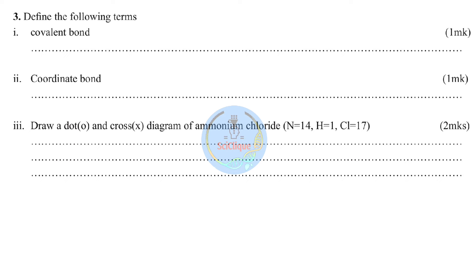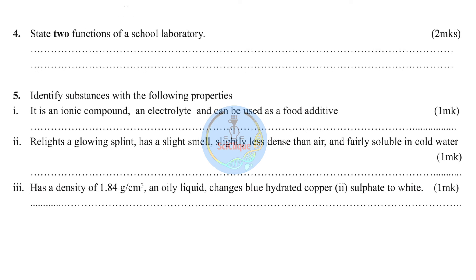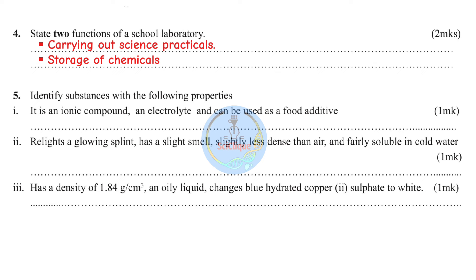Question four: state two functions of a school laboratory. Number one: carrying out practicals. Number two: storage of chemicals. Question five: identify substances with the following properties. Roman numeral one — it is an ionic compound, an electrolyte, and can also be used as a food additive.